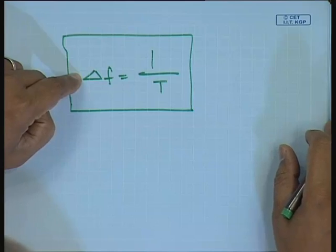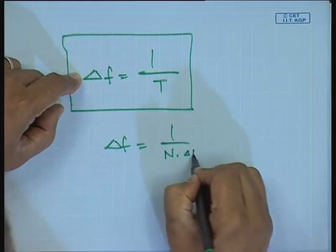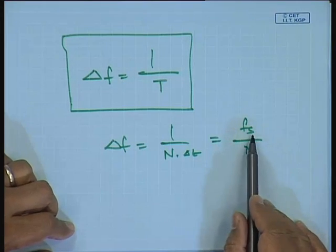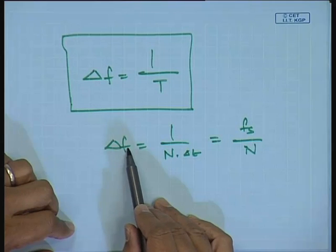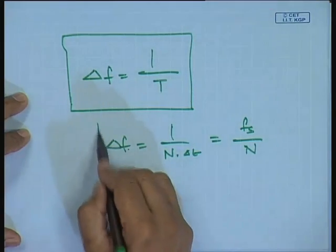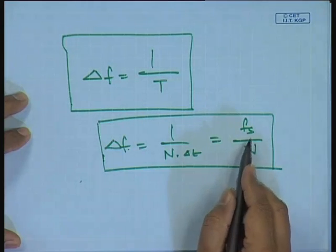If I want to see frequencies every 0.1 Hz, 0.2 Hz, 0.3 Hz, I need a long time record. Because Δf = 1/(N·Δt) = F_s/N, if my sampling frequency is fixed, I can only improve resolution by making N large. Large amounts of data need to be taken to have finer frequency detail — this is something to keep in mind when setting up your FFT analyzers. The frequency resolution is related to both the sampling frequency and the number of data points.